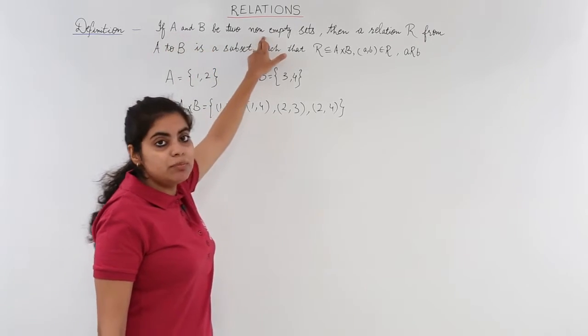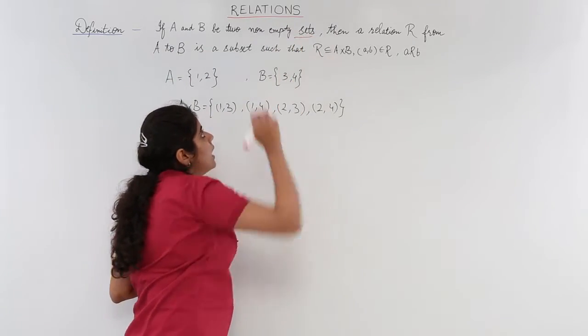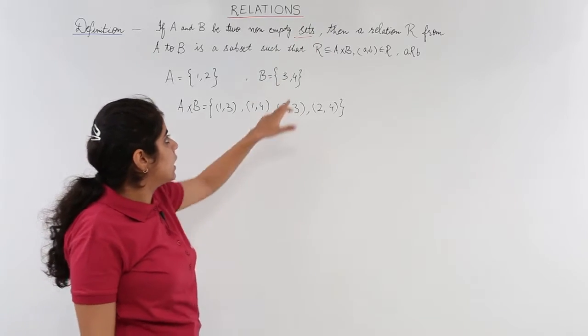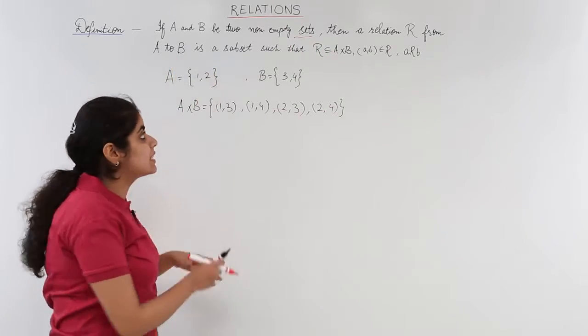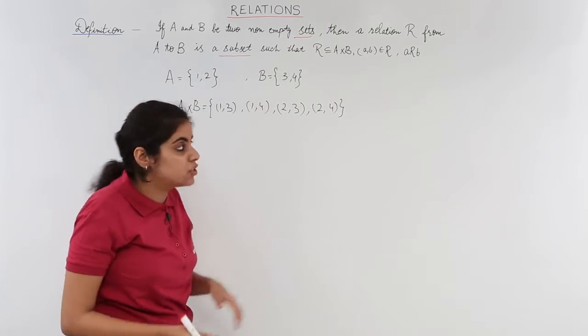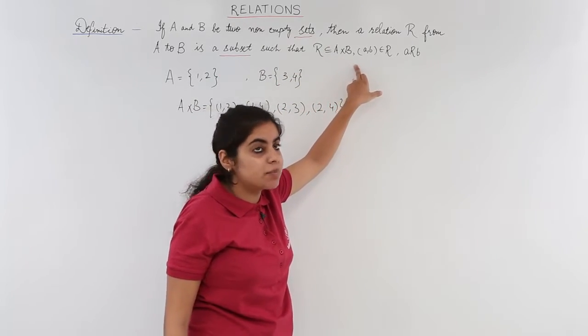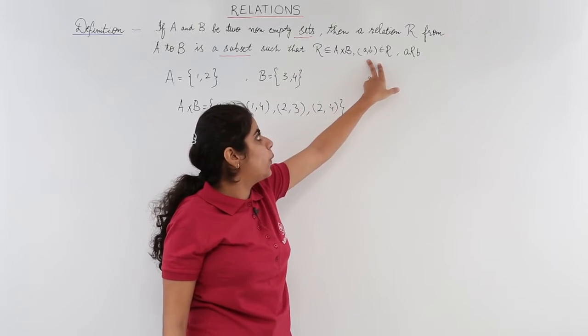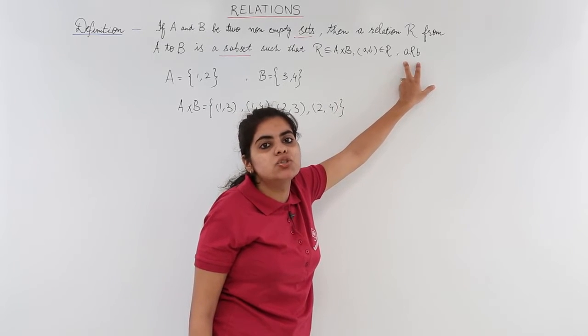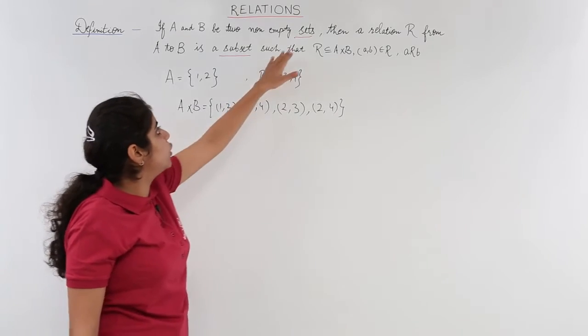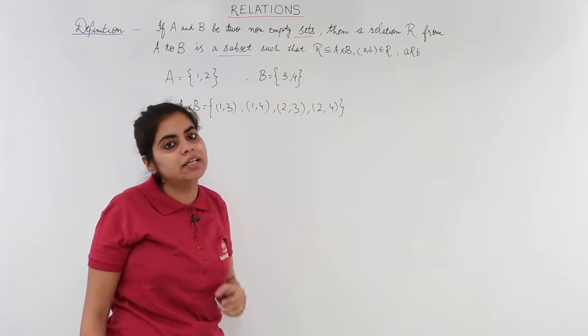The definition is, if A and B be two non-empty sets, then a relation R from A to B is the subset such that R is a subset of A × B where AB belongs to R and it is denoted as ARB means A related to B. Now, let's take up what do you mean by set, what do you mean by subset and then revert back to the definition of relation to understand it in more detail.